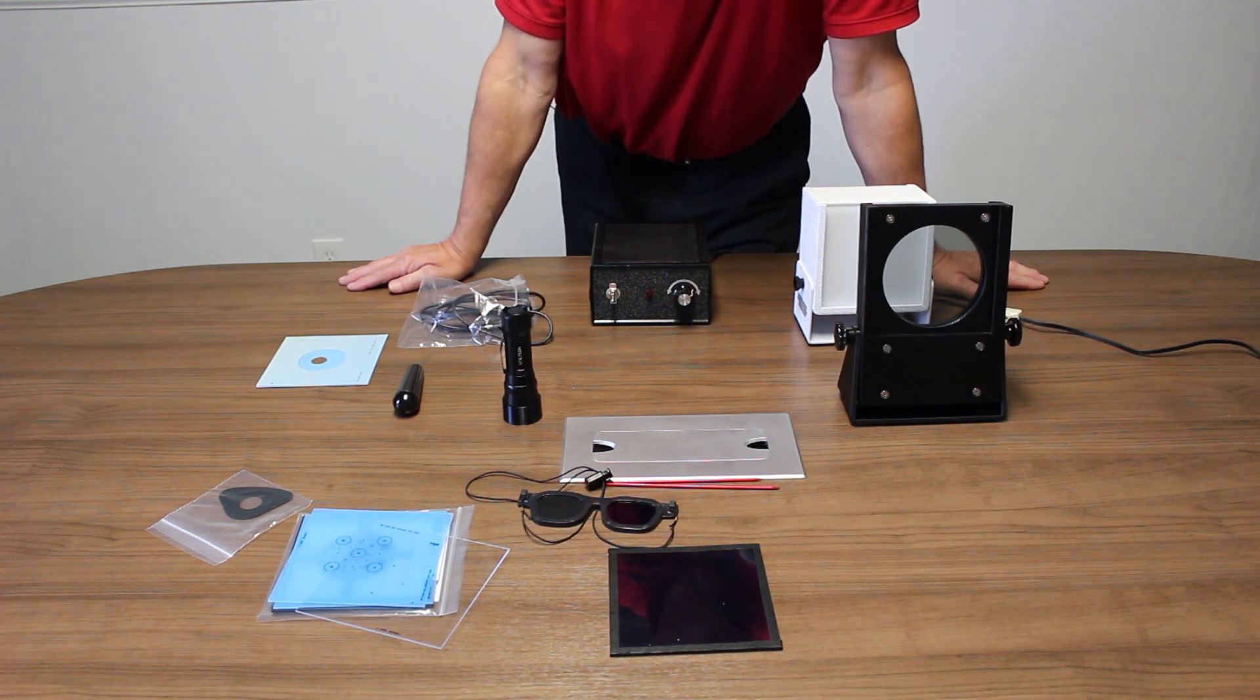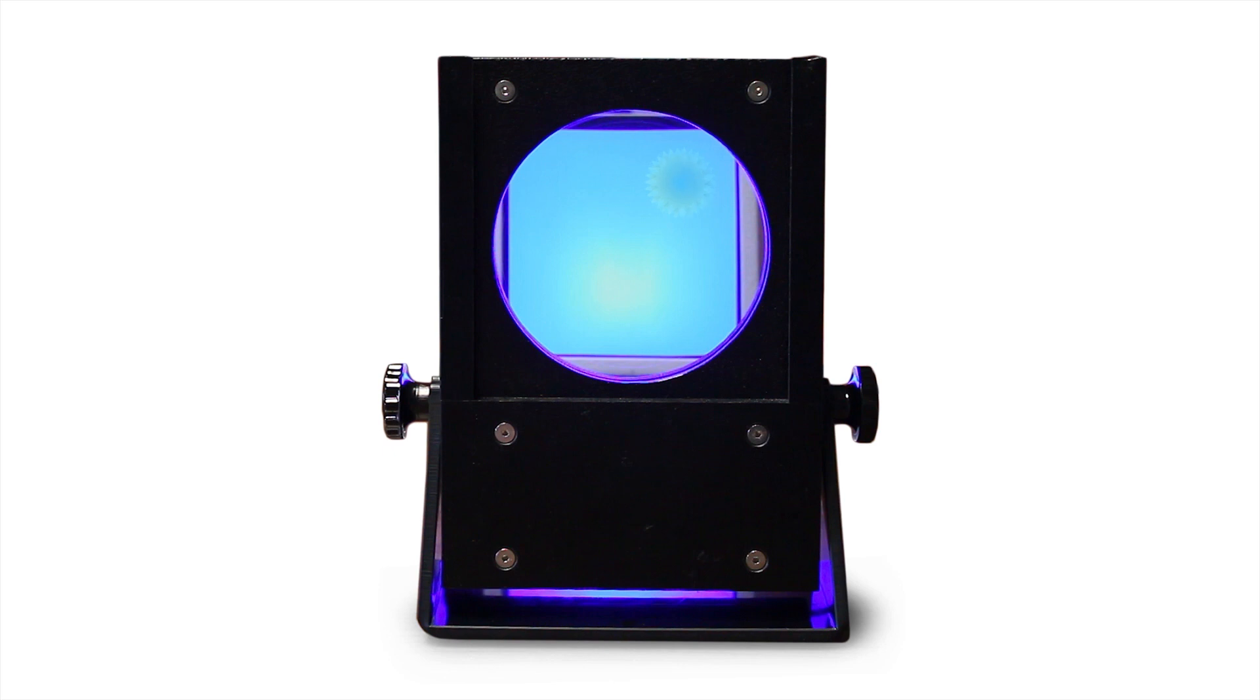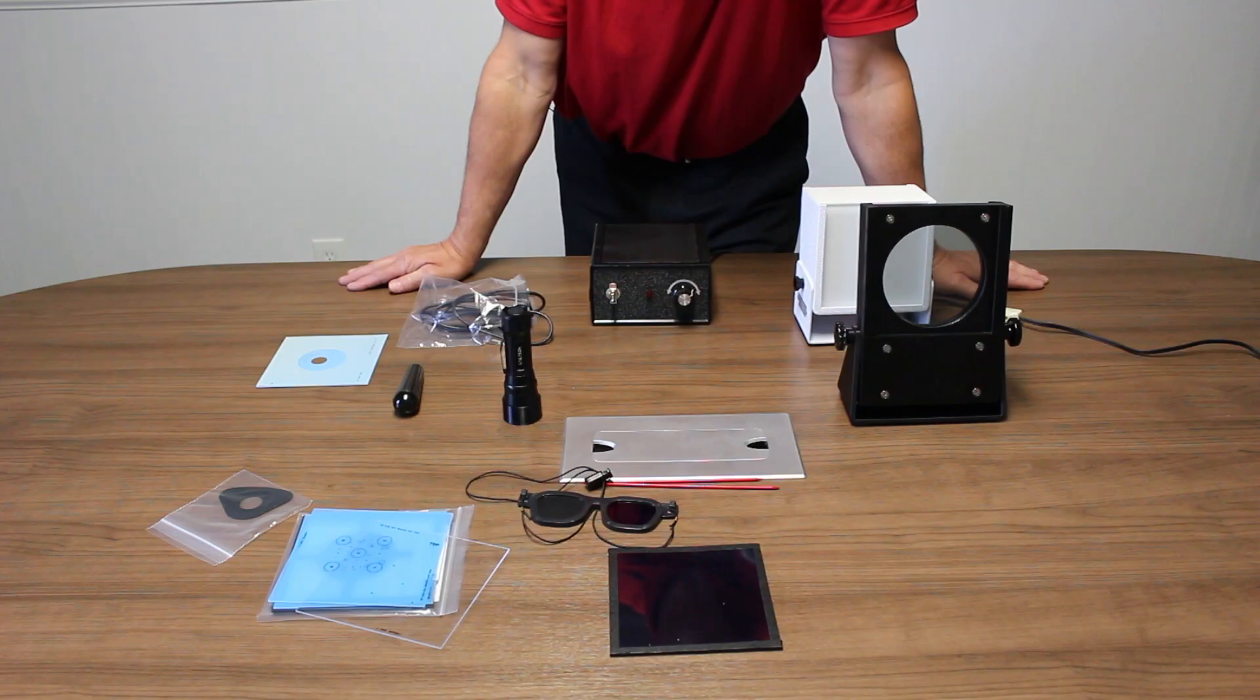Because the macula has yellow pigment in it, when we rotate a Polaroid through a blue or cobalt blue filter, we get what is called a Hadinger Brush, which basically looks like a brush or a propeller that spins around the fovea.